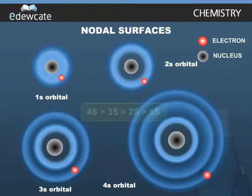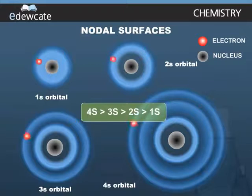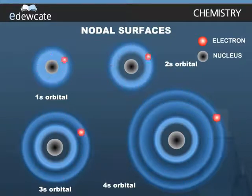That is, the size of the 4s orbital is greater than that of 3s which is greater than 2s which is greater than 1s. And the electron is located further away from the nucleus as the principal quantum number increases.